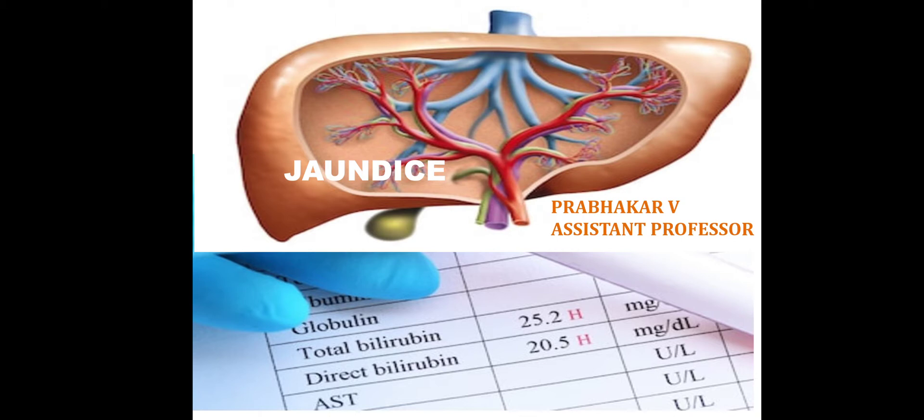Jaundice occurs because there is a pigment called bilirubin. Abnormal levels of bilirubin cause jaundice. Bilirubin is a pigment produced because we have RBC cells in our body, and the lifespan of RBC is 120 days. After that lifespan, there is a breakdown, and from that process bilirubin is produced. This bilirubin is metabolized in the liver, then it passes to the small intestine and is excreted. This is the normal process.